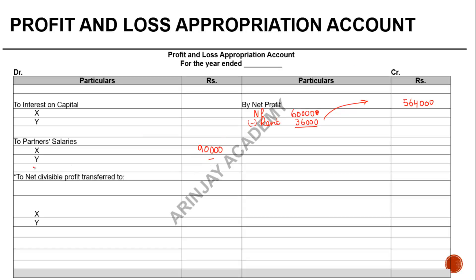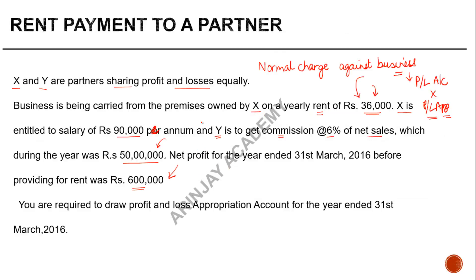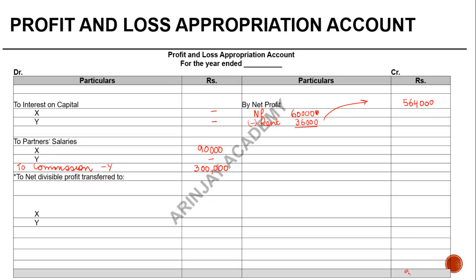There is no interest on capital. Looking at the remaining profits: the net profit brought forward is 5,64,000. After reducing 3,90,000 for salary and commission, what is left is 1,74,000. Since they are sharing profits and losses equally, X gets 87,000 and Y gets another 87,000 — totalling 1,74,000 as the distribution of profit.